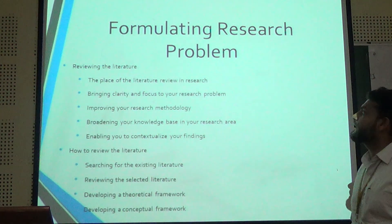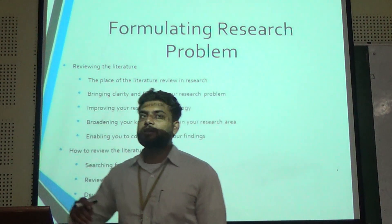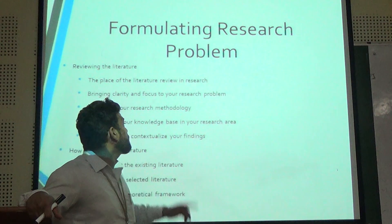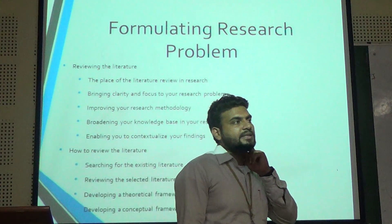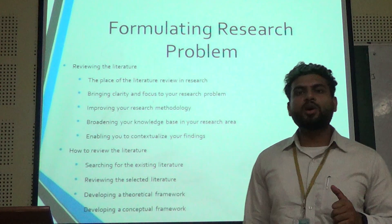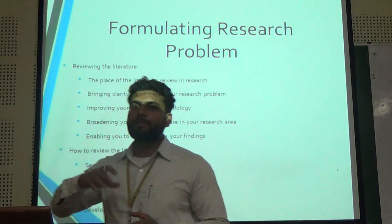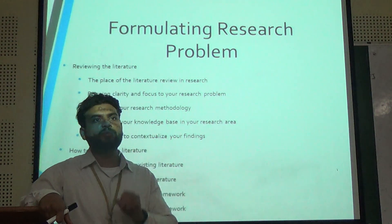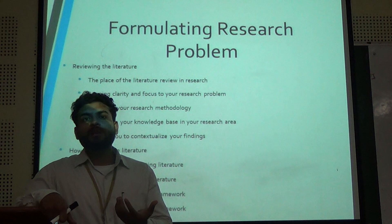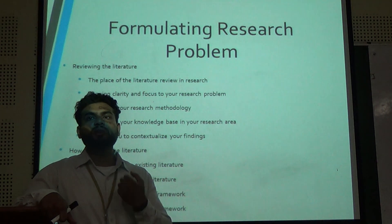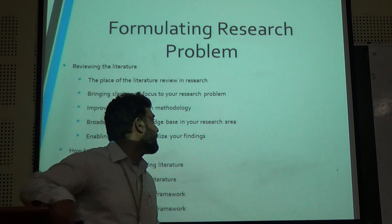Formulating a research problem is a very big process that comes through the review of literature. For formulating a research problem, we study many thousands of papers. From those papers, we can identify a common problem — how researchers proceed and how they conduct research. By gaining that understanding, we can define one common research problem.